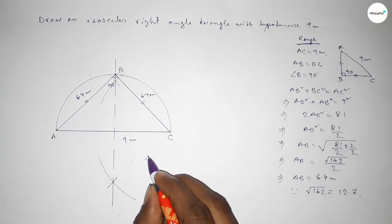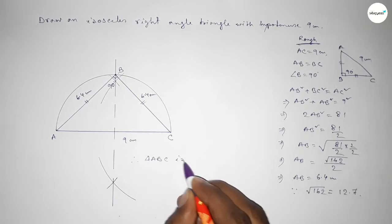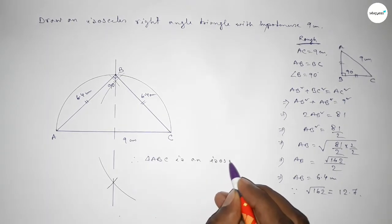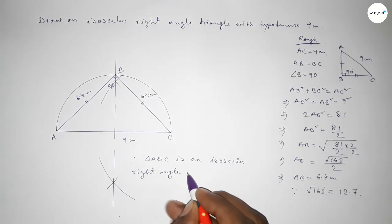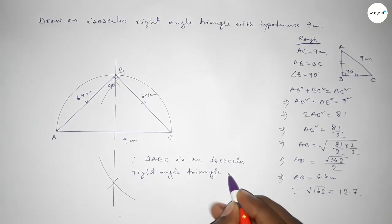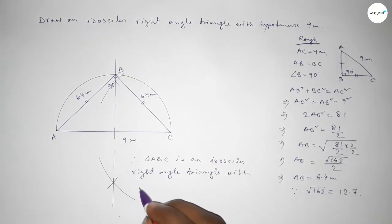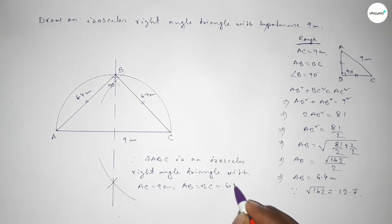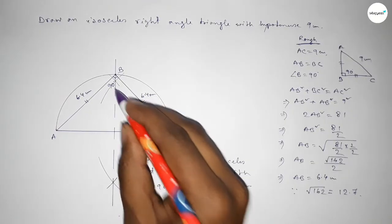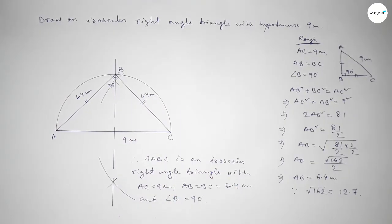So BC equals 6.4 centimeters and AB equals 6.4 centimeters, and AC equals 9 centimeters. Therefore triangle ABC is an isosceles right angle triangle with only the given hypotenuse AC equal to 9 centimeters, the two equal sides AB equal to BC equal to 6.4 centimeters, and angle B equal to 90 degrees. That's all — thanks for watching!